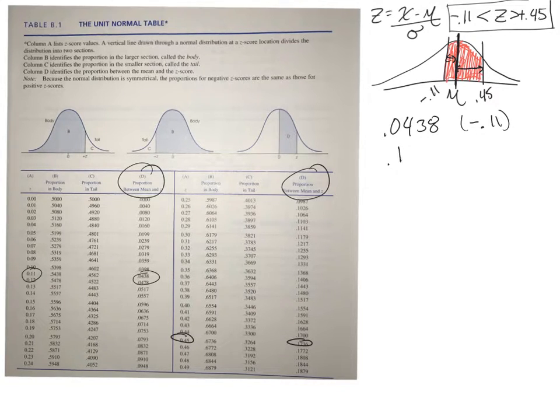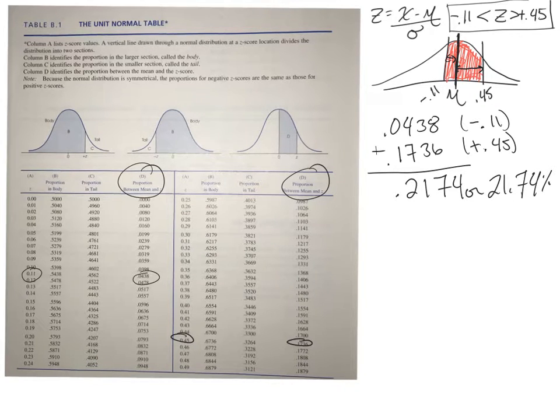So all you need to do then is add together 0.0438 plus 0.1736, and that gives you 0.2174, or percentage-wise, 21.74%.